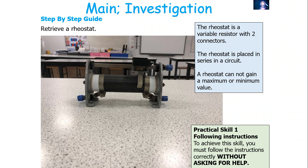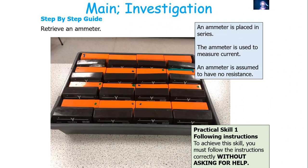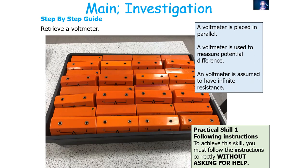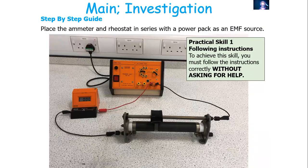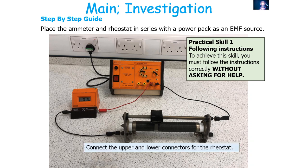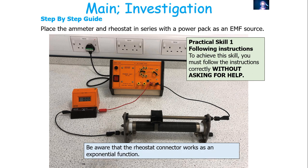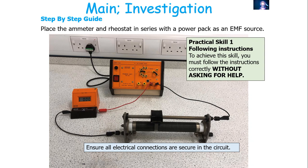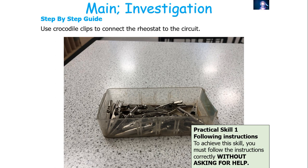You'll need an ammeter placed in series in the circuit to measure current — we assume an ammeter has no resistance. A voltmeter placed in parallel measures potential difference — we assume it has infinite resistance. Place the ammeter and rheostat in series with the power pack. When connecting the rheostat, connect the upper and lower connectors to gain variance in results. Note that the rheostat works as an exponential function: a small shift on one side causes a big change in values, whilst a large shift on the other side causes a small change. Make sure all connections are secure, and use crocodile clips to connect your rheostat into the circuit.